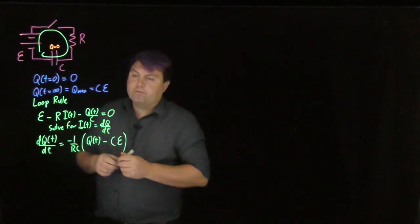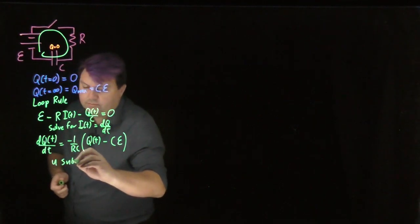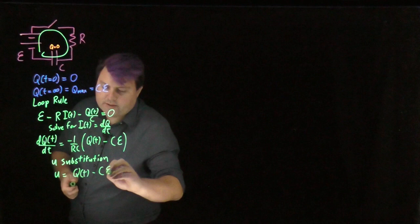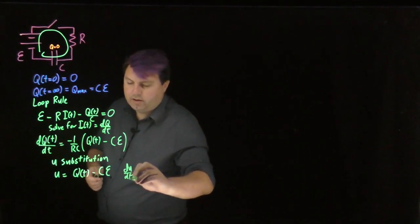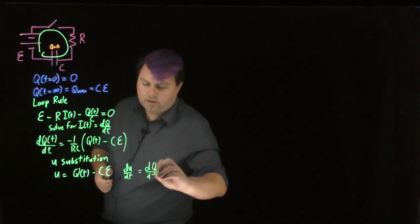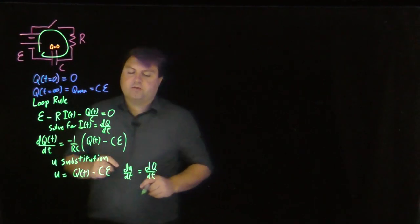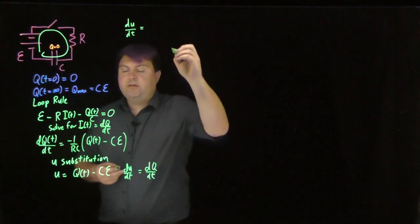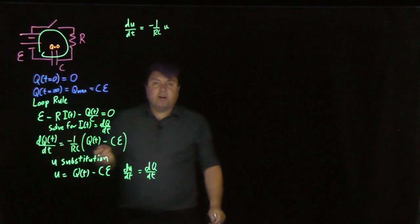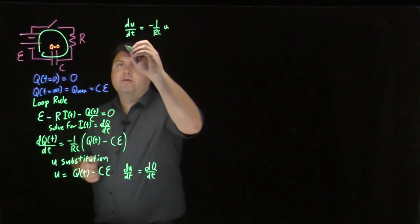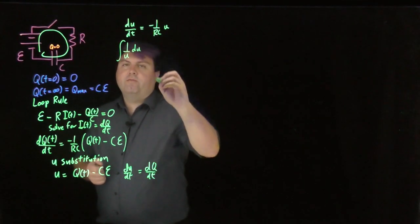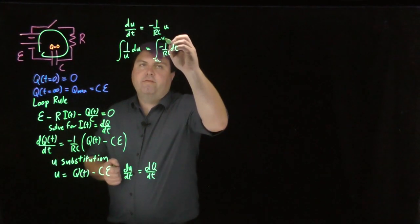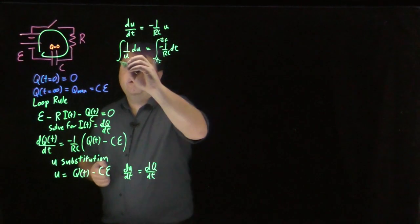So what can we do with this? We can use a U-substitution. If we say that U equals Q(t) minus C times the EMF of the battery, then dU/dt equals dQ/dt, since the derivative of the constant C times V_battery is zero. Now we have dU/dt equals negative one over RC times U, which looks very familiar to what we did with the capacitor discharging. We then set up the integral from T_i to T_f and U_i to U_f.